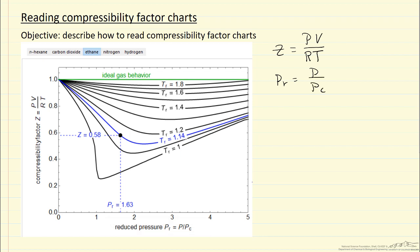We have a series of curves as a function of reduced temperature, which is the temperature over the critical temperature.